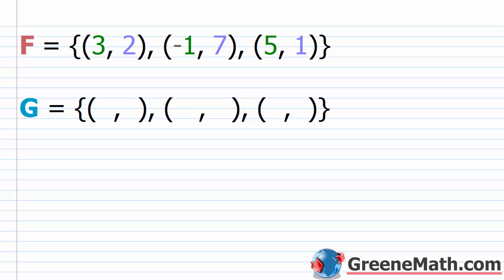The x and the y values are going to be swapped. To see that with a very simple example, let's start out with f. And f is just a very simple relation, and it's also a function, and it's also a one-to-one function. So it just contains three ordered pairs: (3, 2), (-1, 7), and (5, 1).